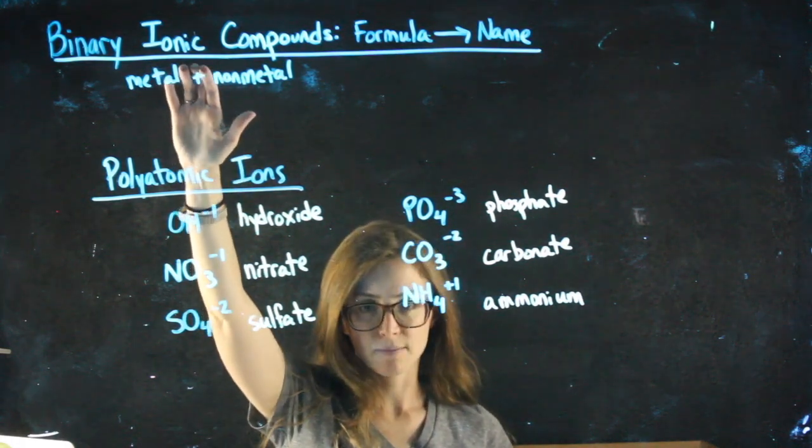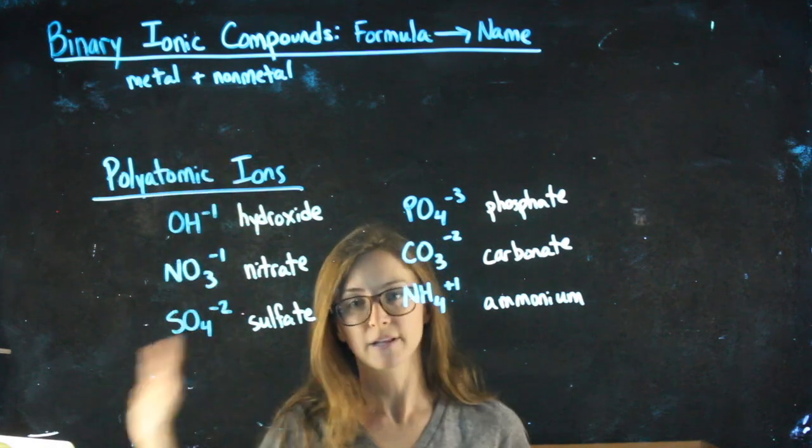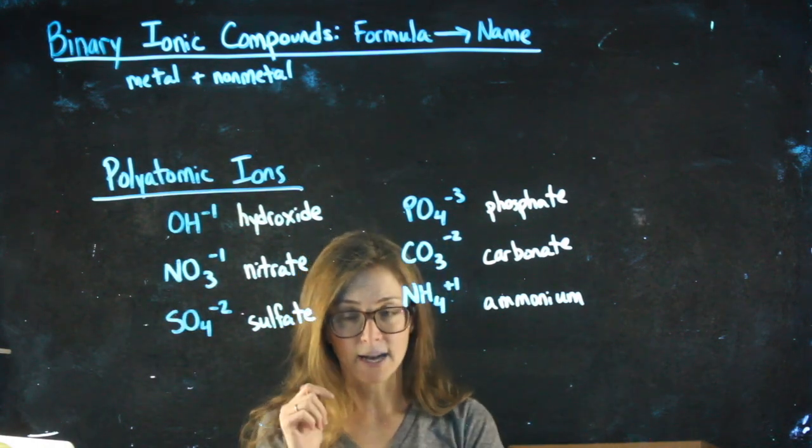Okay, when we first looked at ionic compounds, we were always exclusively talking about one metal, something from the left-hand side of the periodic table, and one non-metal, something from the right-hand side.